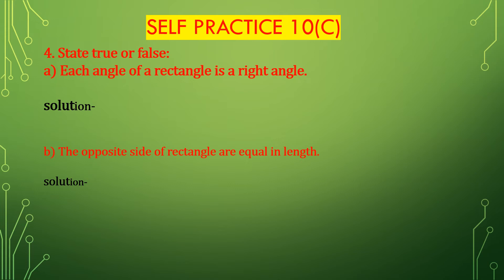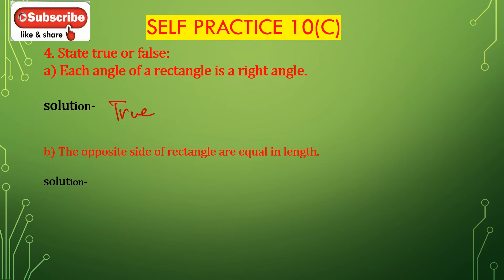Now we will solve question number 4: state true or false. Bit A: each angle of a rectangle is a right angle. This is true — all angles are equal to 90 degrees. Bit B: the opposite sides of a rectangle are equal in length. This is also true — opposite sides are equal in a rectangle.